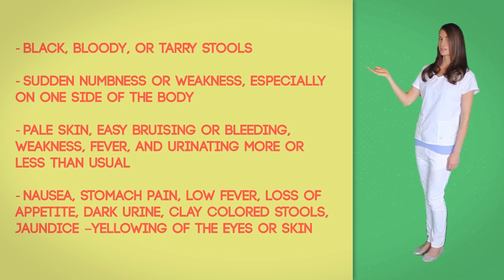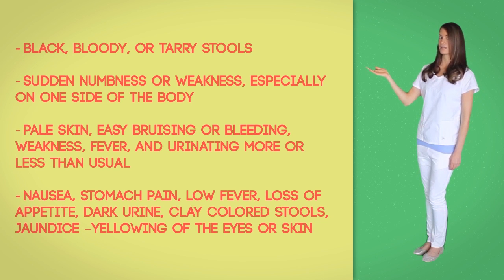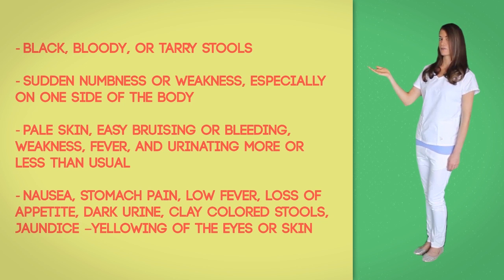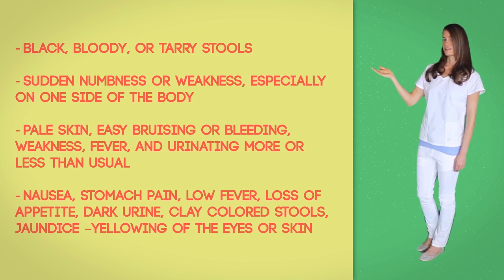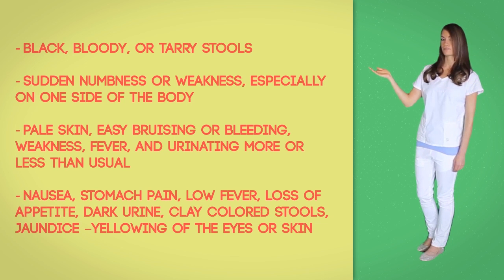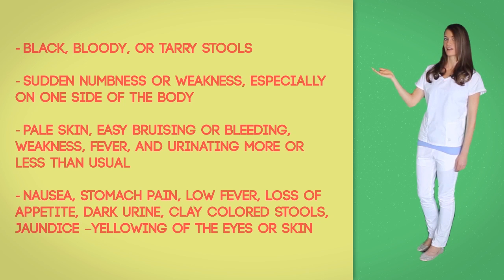Sudden numbness or weakness, especially on one side of the body; pale skin; easy bruising or bleeding; weakness; fever; urinating less or more than usual; nausea; stomach pain; low-grade fever; loss of appetite; dark urine; clay-colored stools; jaundice or yellowing of the eyes or skin.